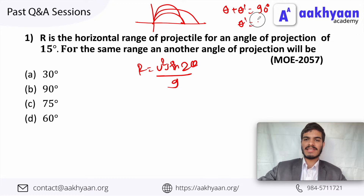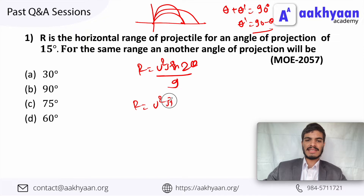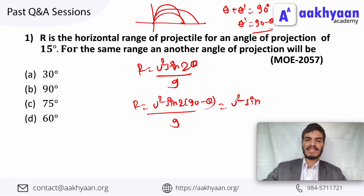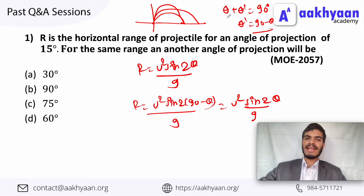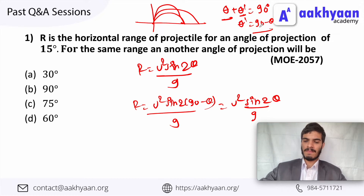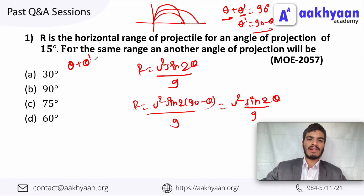I substitute theta as 90 minus theta: u squared sin 2(90 minus theta) divided by g. That means u squared sin(180 minus 2theta) divided by g, which equals u squared sin 2theta divided by g — the same range. So for example, 15 degrees and 75 degrees sum to 90 degrees and give the same range. The condition is theta plus theta-dash equals 90 degrees.